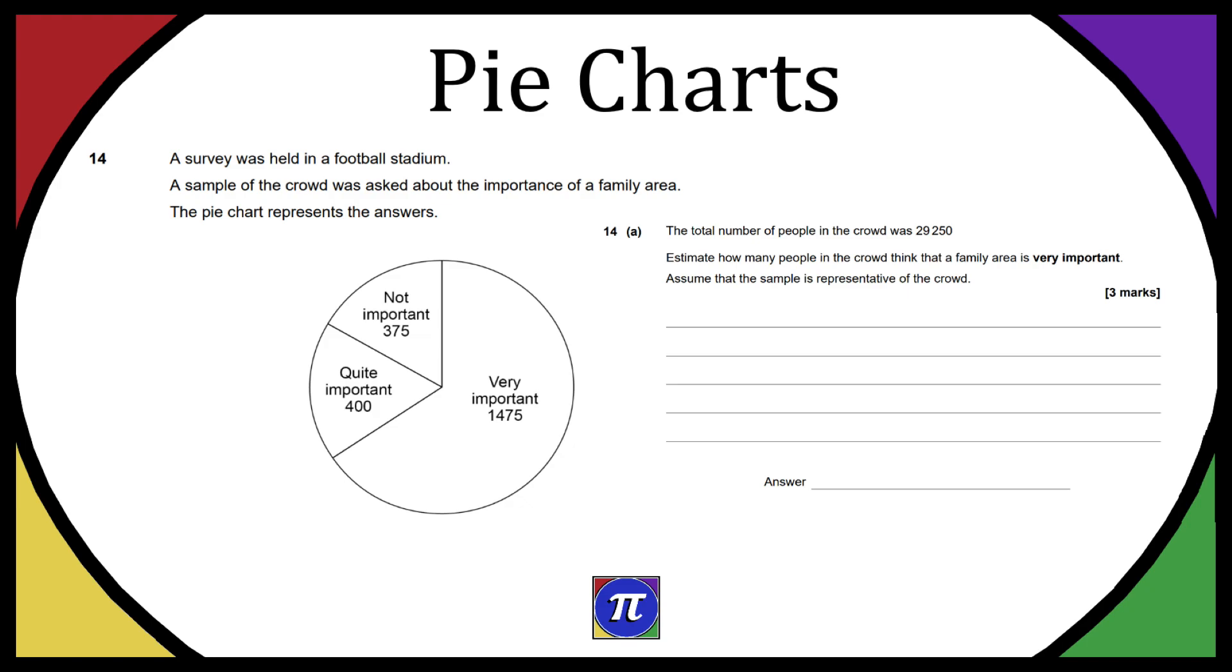Looking at the pie chart briefly, it's definitely not going to add up to 29,250, but let's work out how many people are represented in the pie chart. If we add everyone up, it'd be 375 plus 400 plus 1,475, and I got that as a total of 2,250.